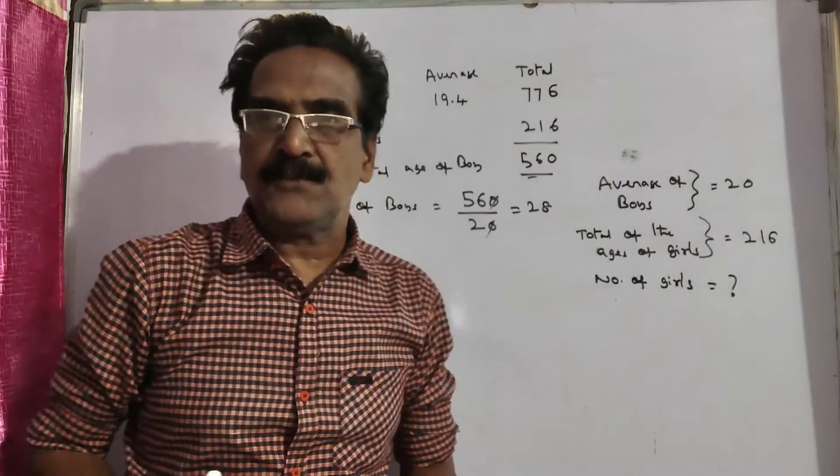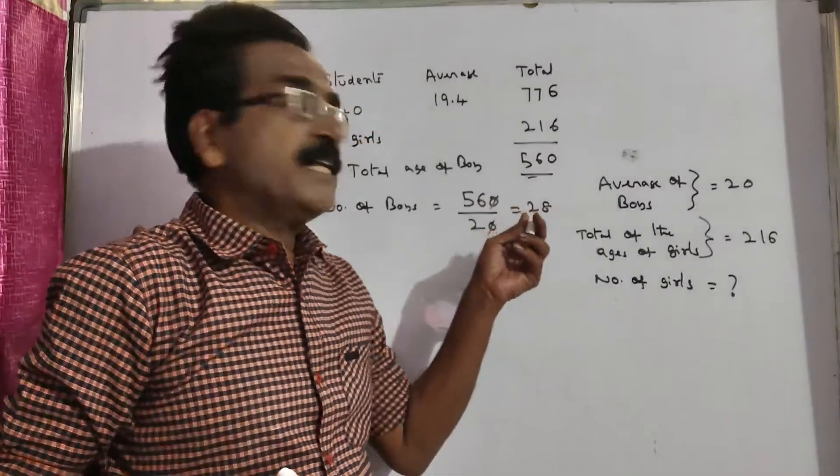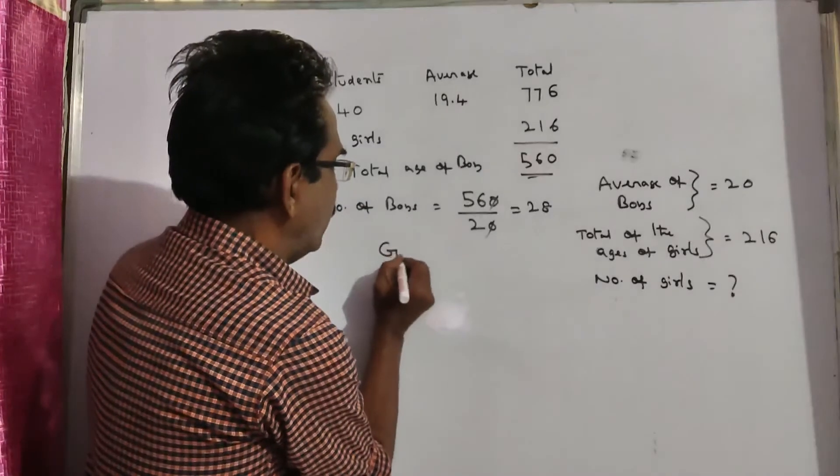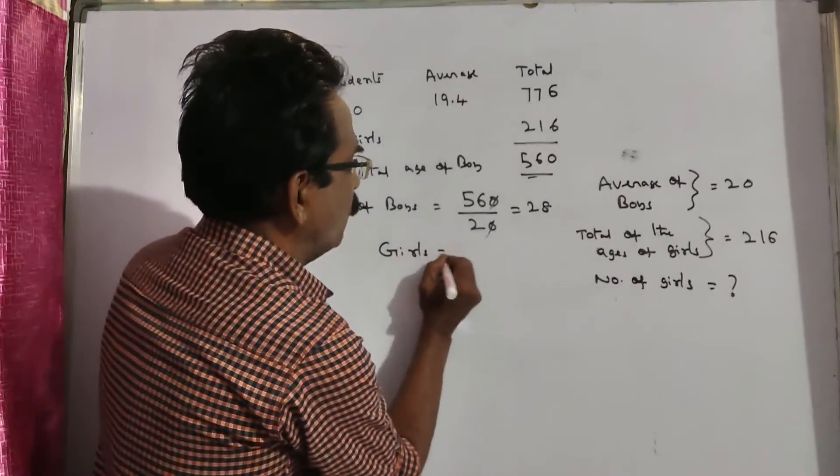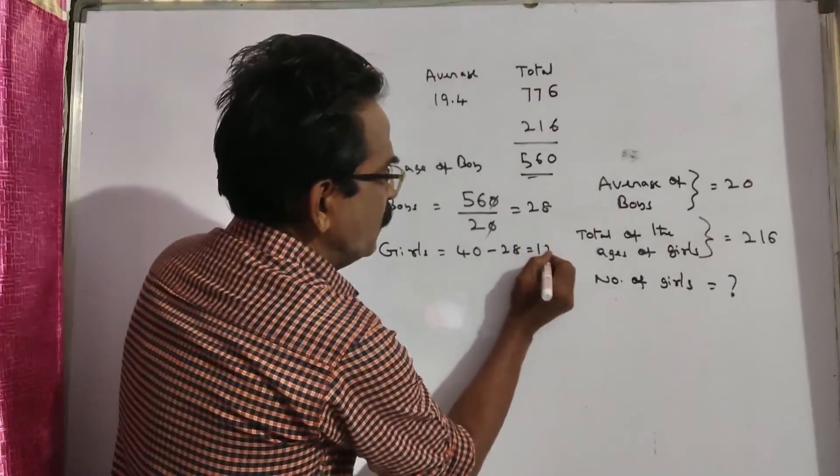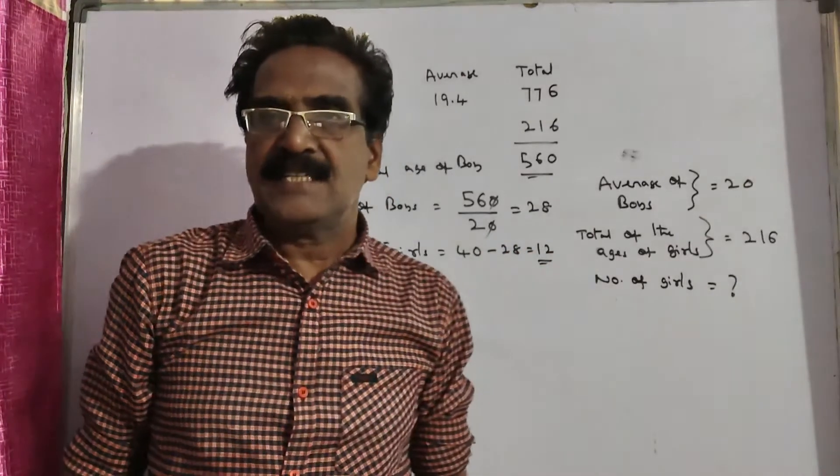So total 40 students, boys 28, girls are 40 minus 28, which is 12. Number of girls is equal to 40 minus 28, that is equal to 12. 12 is your answer friends.